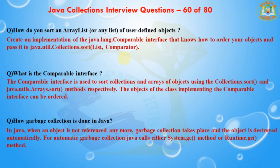The next question is: how is garbage collection done in Java? In Java, when an object is not referenced anymore, garbage collection takes place and the object is destroyed automatically. For automatic garbage collection, Java calls either the System.gc() method or the Runtime.gc() method.